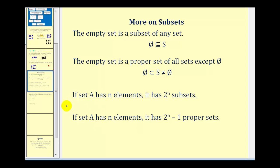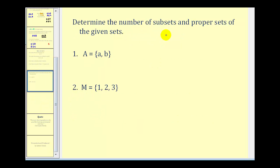Let's take a look at a couple of examples of this. Determine the number of subsets and proper subsets of the given sets. So number 1 has 2 elements, so n is equal to 2. So they're supposed to be 2 to the nth power subsets. So 2 to the second would give us 4 subsets. And the proper subsets would be 2 to the second minus 1. That will be 3 proper subsets.